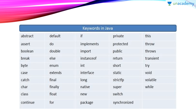Instead of const, we use the final keyword in Java. And goto is a keyword which is used to transfer control from one statement to any other statement in a program, which is not a good programming practice. That is why we don't use goto and const in Java.